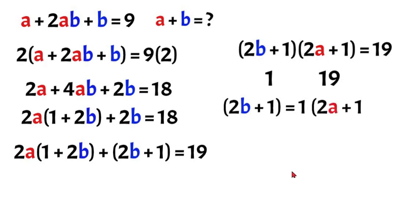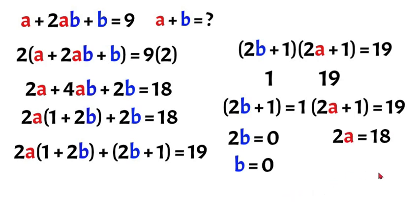So 2b plus 1 is equal to 1. We'll subtract 1 which will leave us with 2b is equal to 0. Divide by 2 and b will be equal to 0.